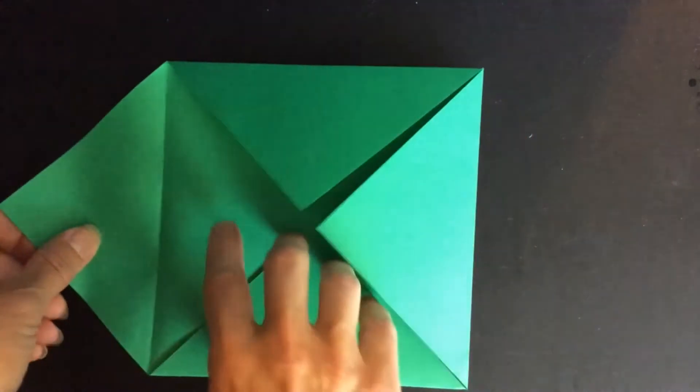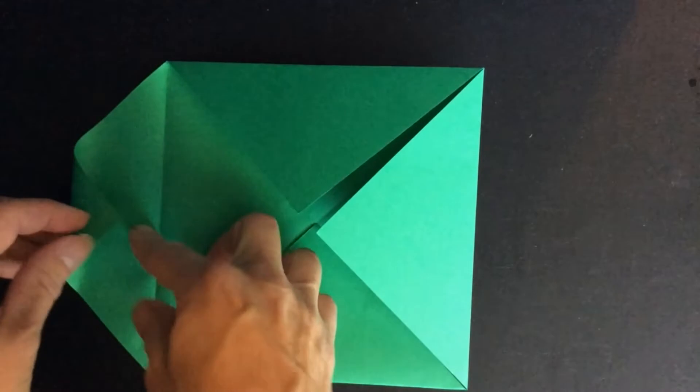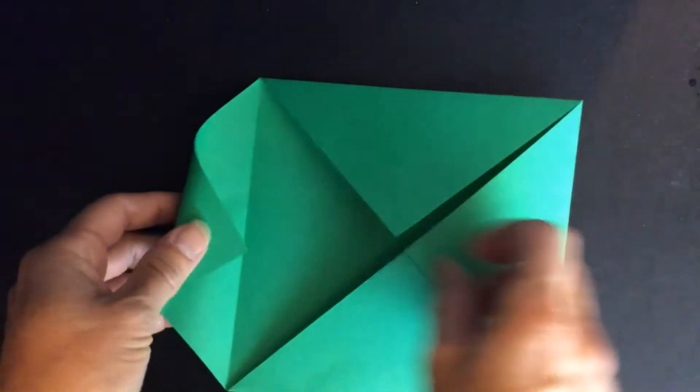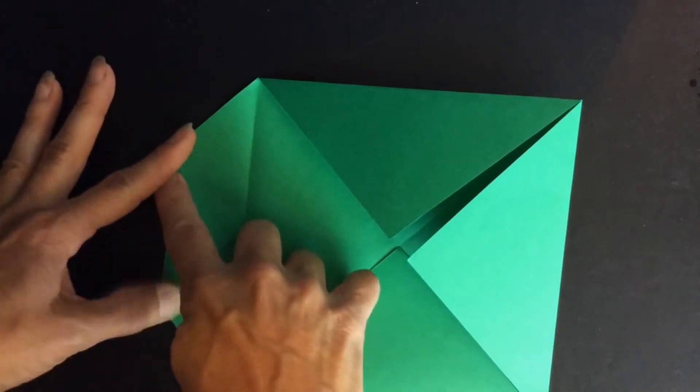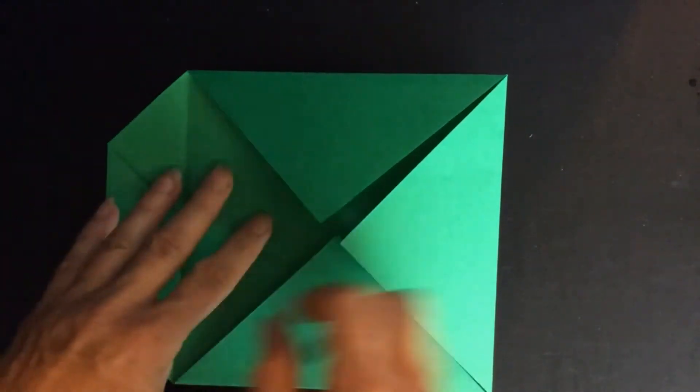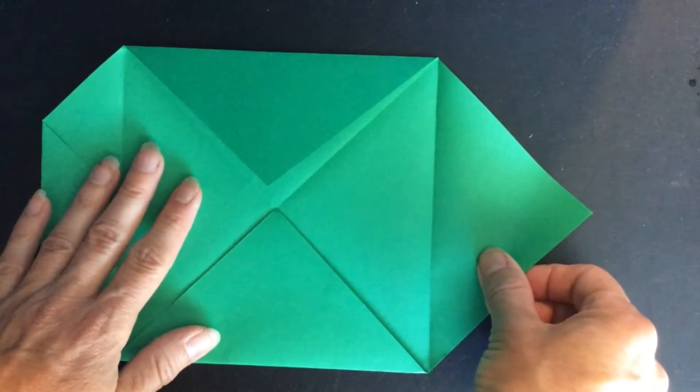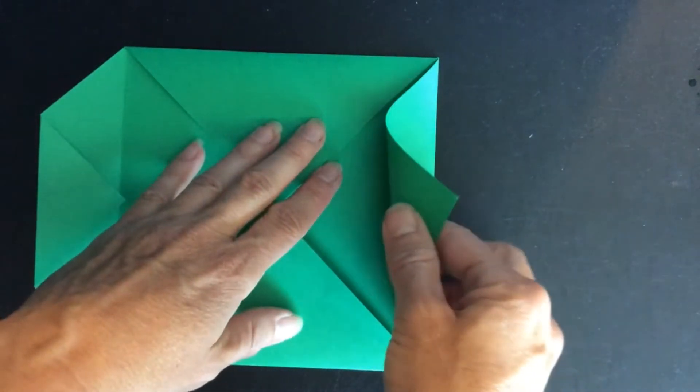Unfold one flap. Take the point of it and fold it toward this crease. Then take the opposite flap and do something similar.